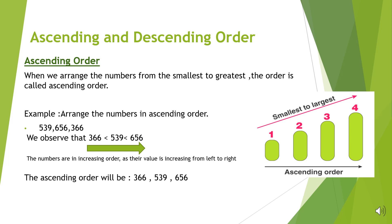First, we will observe the digits in the hundreds place. They are 5, 6, and 3. Now, we will arrange them in ascending order. We will get 3, 5, 6. The smallest is 3, so the smallest number is 366.